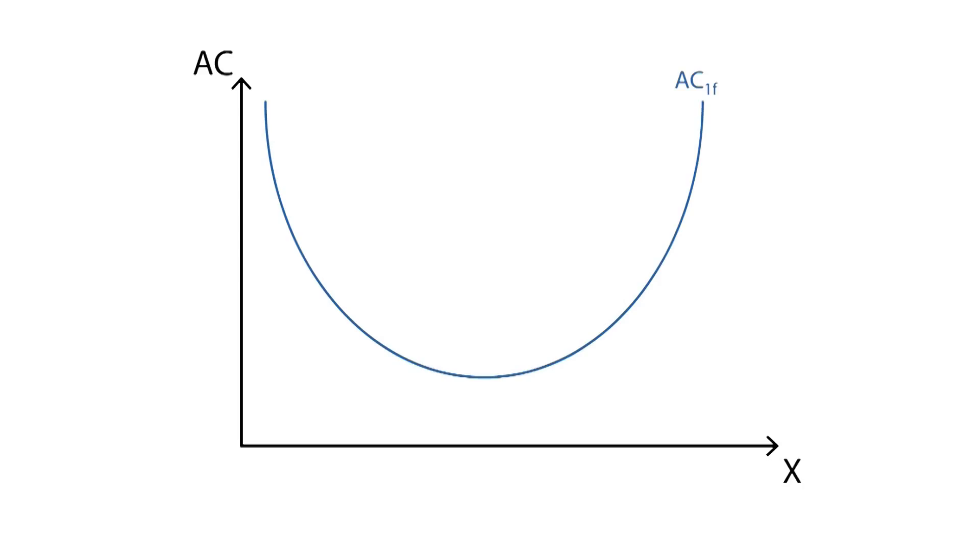At an initial stage, average cost decreases as a result of economies of scale. However, as we can see, there is a point where the average cost starts to rise. From this point onwards, the firm will suffer from diseconomies of scale, and therefore the average cost increases due to an excessive size of production.